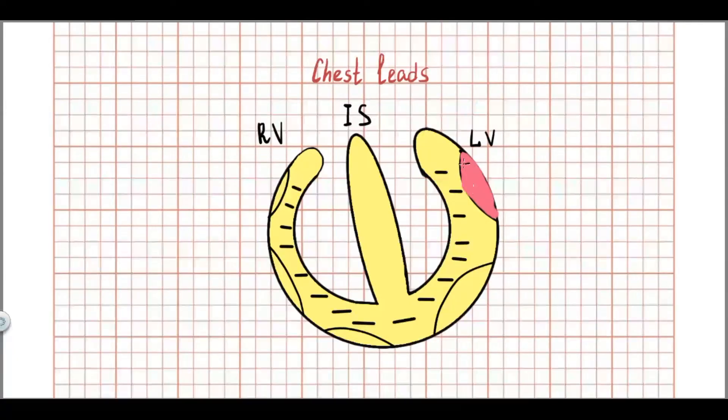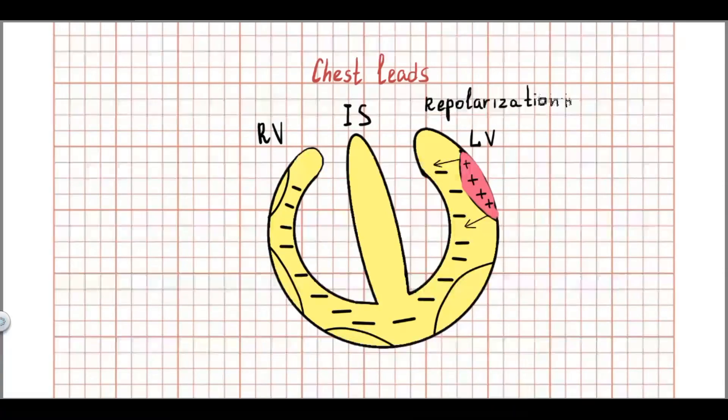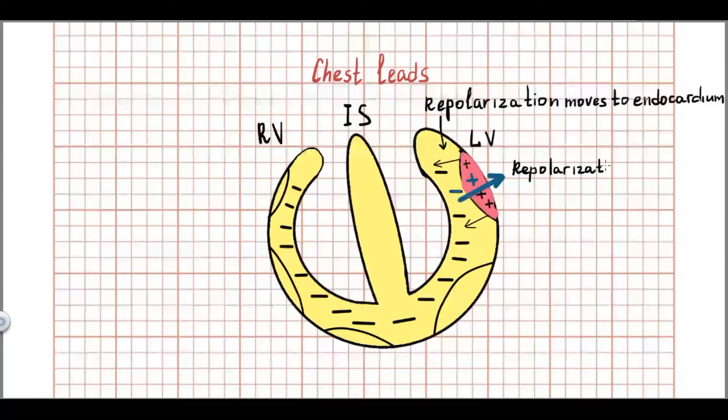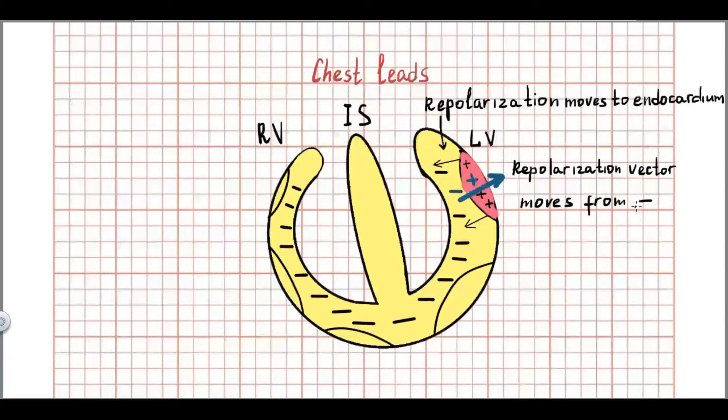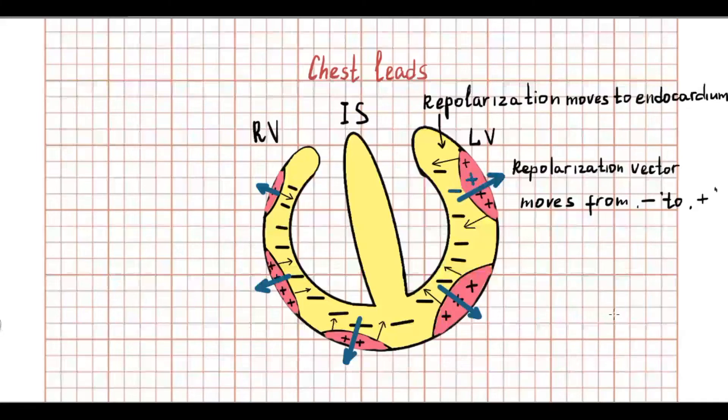Repolarized epicardium area have positive charge, and depolarized have negative charge. Difference of potential arise between positive and negative charges. As a rule, a repolarization wave is pointed from negative to positive charges. So mean repolarization axis is oriented from inside to the heart.